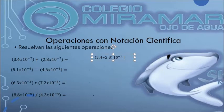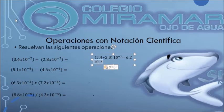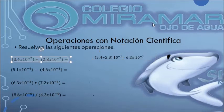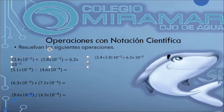Quiere decir que el resultado lo voy a multiplicar por ello. El resultado es igual a... 3.4 más 2.8 es 6.2. Dejo la misma base: 6.2 por 10 a la menos 2. Recuerden, dejamos la misma base de nuestra potencia. Nuestra base es 10 elevado a un exponente de menos 2, y lo dejamos igual. Entonces aquí pongo el resultado: 6.2 por 10 a la menos 2.